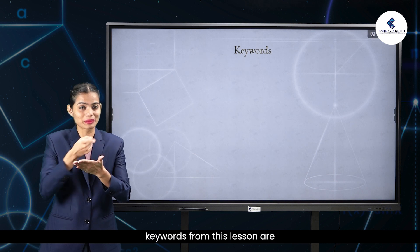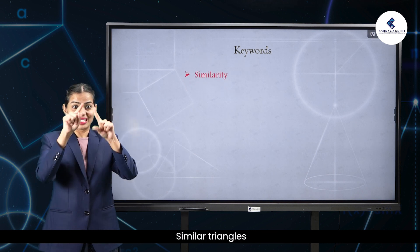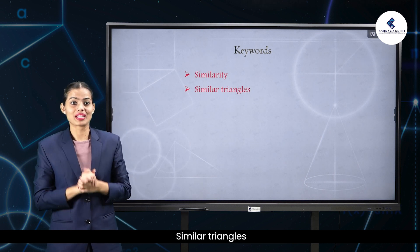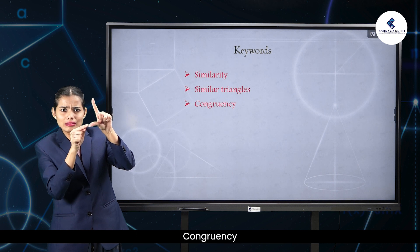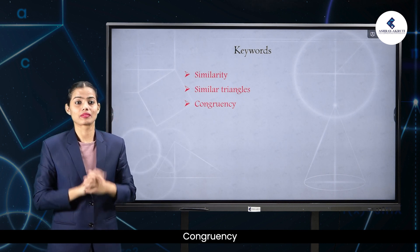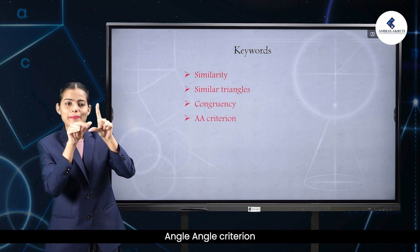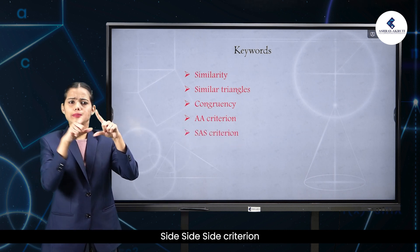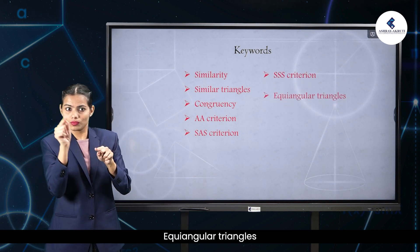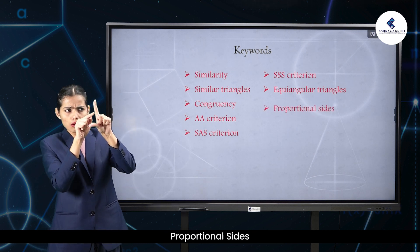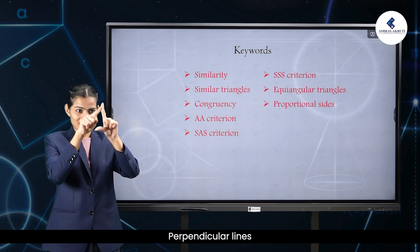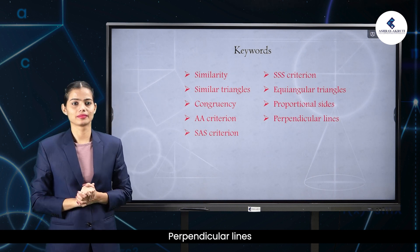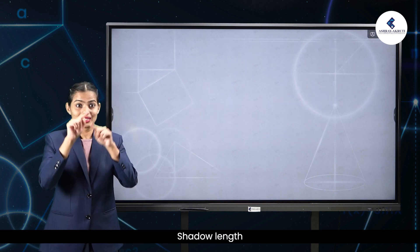Keywords from this lesson are: similarity, similar triangles, congruency, angle-angle-angle criterion, side-angle-side criterion, side-side-side criterion, equiangular triangles, proportional sides, perpendicular lines, shadow length, similar triangles.